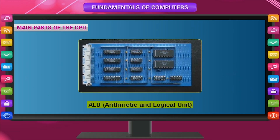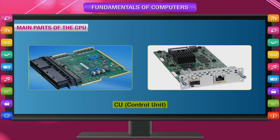The second part of the CPU is ALU — Arithmetic and Logic Unit. It performs all the arithmetic calculations and logic operations. The third one is the control unit. The control unit controls the working of all the computer parts that are connected to the CPU.